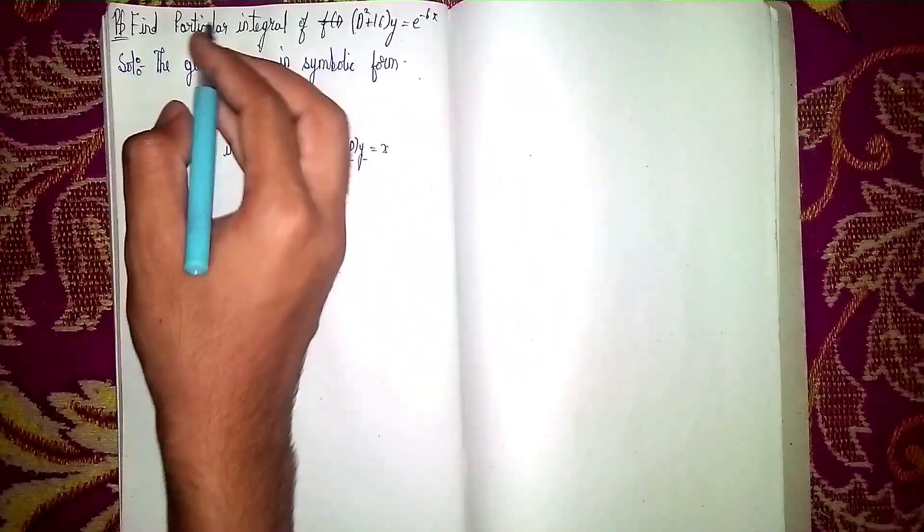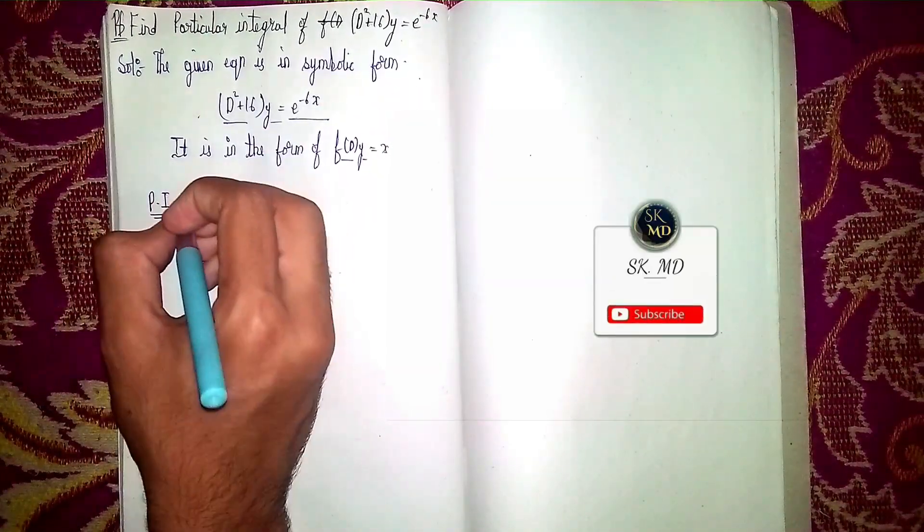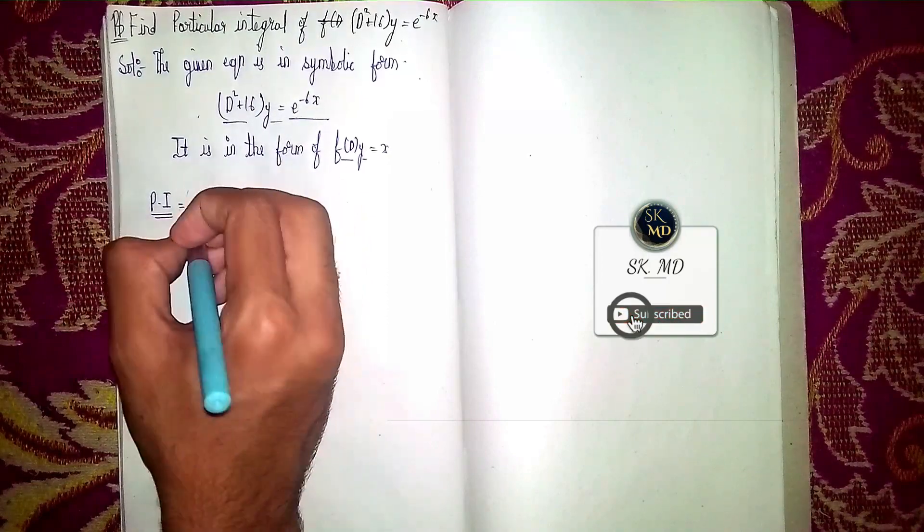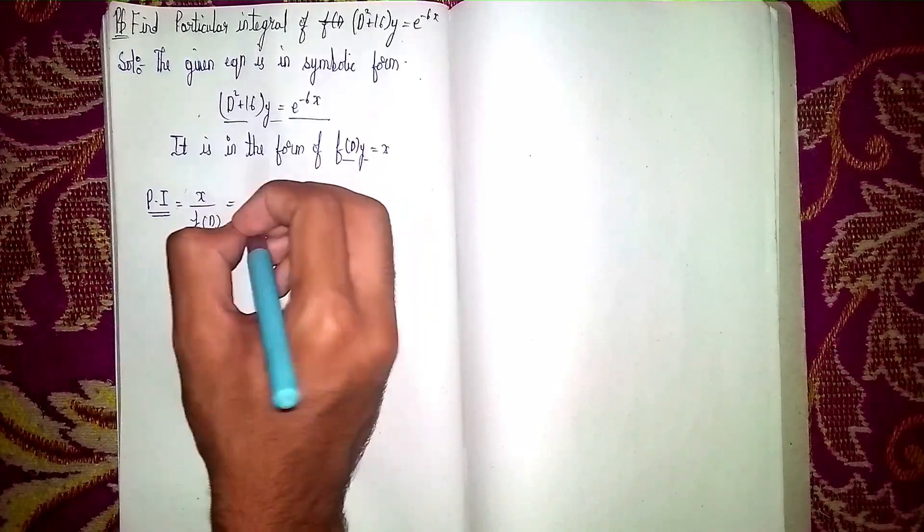Now to find the particular integral, PI formula - PI is the shortcut. PI = x/f(D). Okay, now what is it? e^(-6x) divided by (D² + 16).